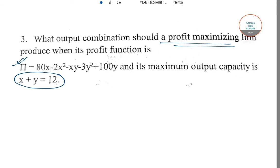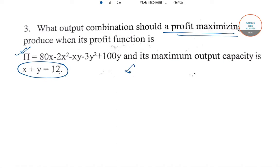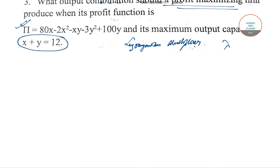We will solve this using the Lagrangian multiplier method. The process of writing is L equals the main equation: 80x minus 2x² minus xy minus 3y² plus 100y, plus lambda, then put everything on the right-hand side.